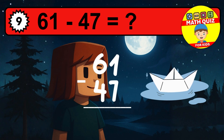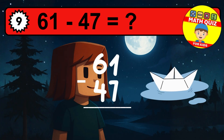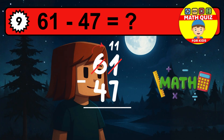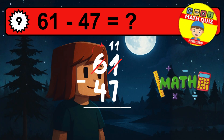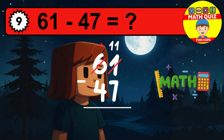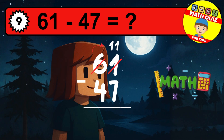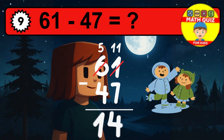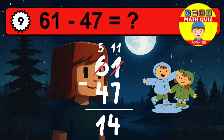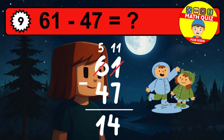Let's solve this step by step. We start with the units. One minus seven is not possible, so we need to regroup. We take one ten from the tens column. Now we have five tens, and the units become eleven. Now we subtract. Eleven minus seven is four.